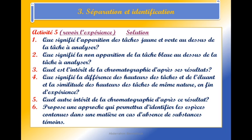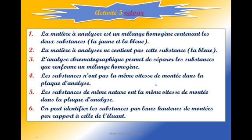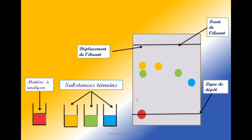Quelle est la nature de la chromatographie d'après ces résultats ? L'analyse chromatographique permet de séparer les substances que renferme un mélange homogène. Au départ, les substances étaient toutes mélangées dans la tache rouge. L'analyse chromatographique a permis de séparer la substance jaune et la substance verte. Donc la chromatographie permet la séparation des substances chimiques.